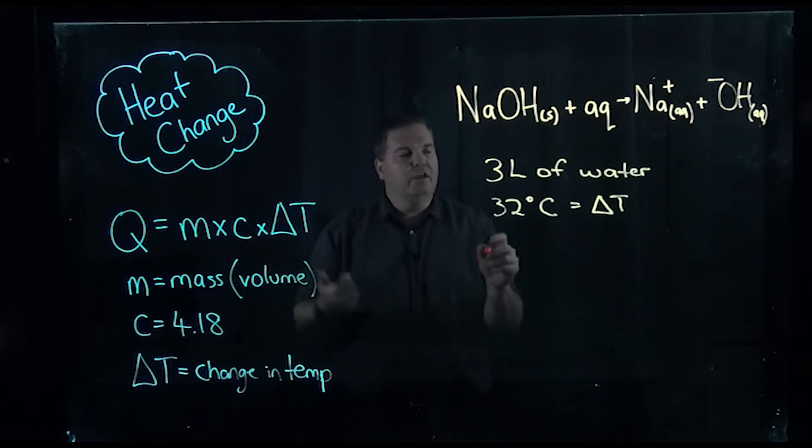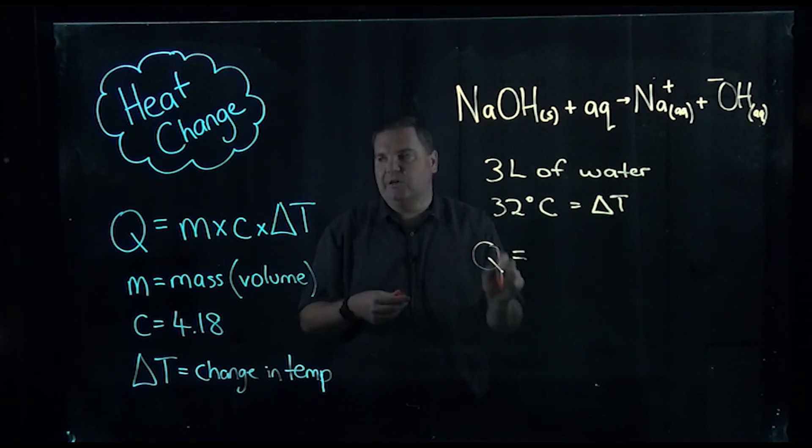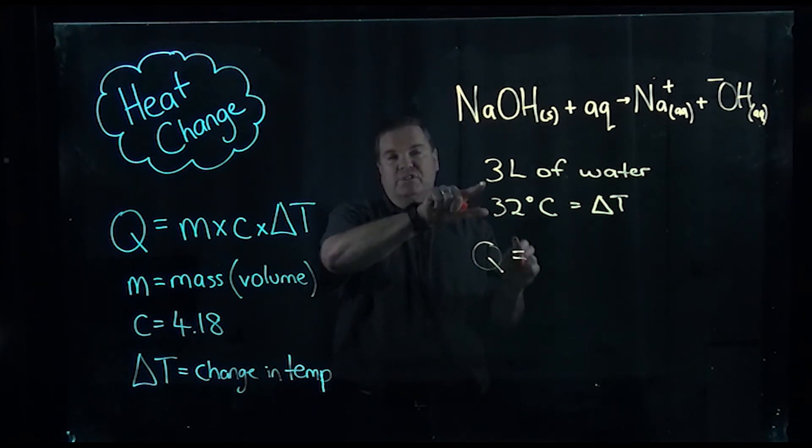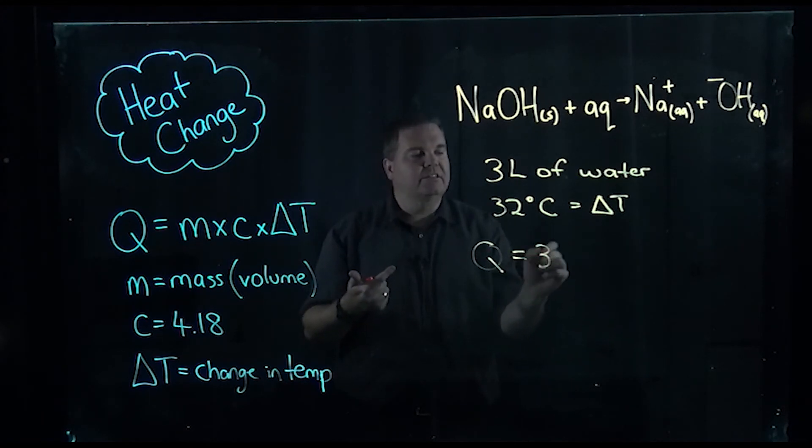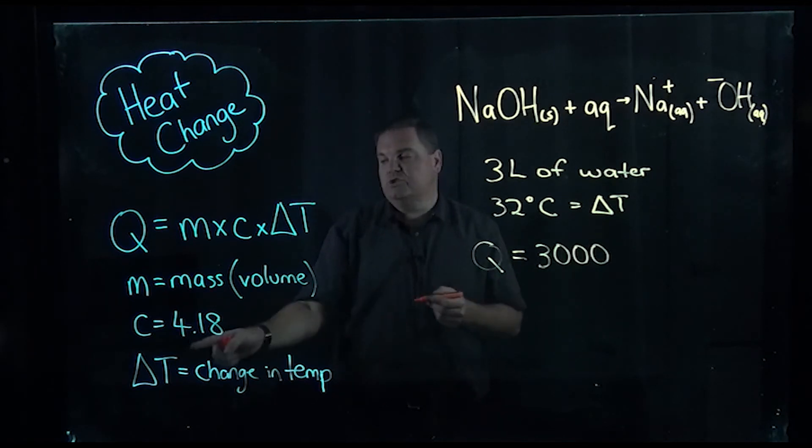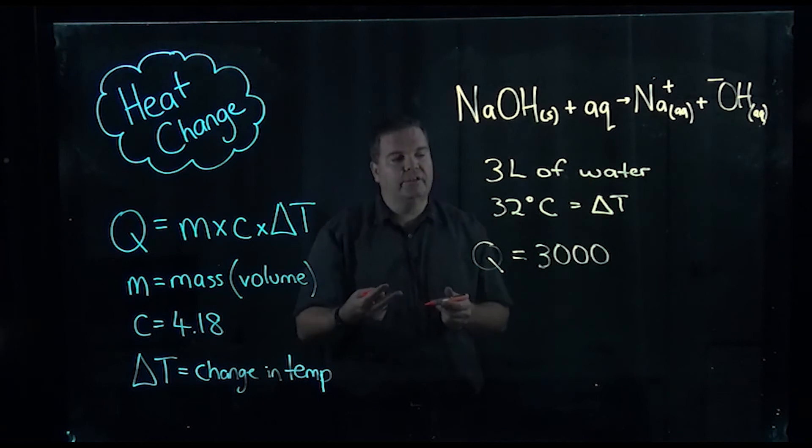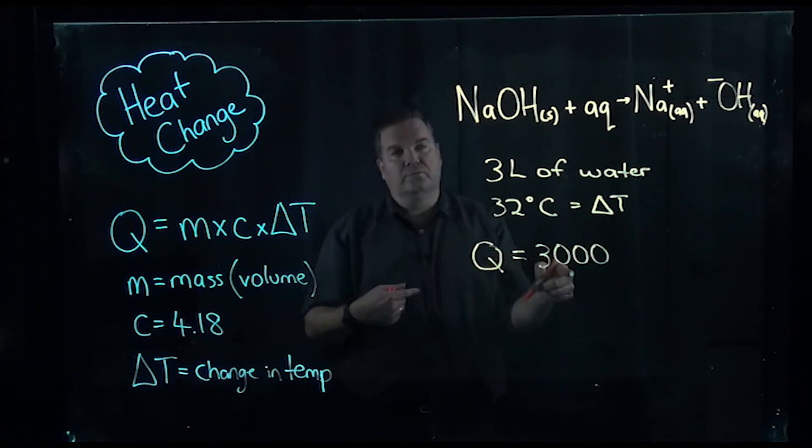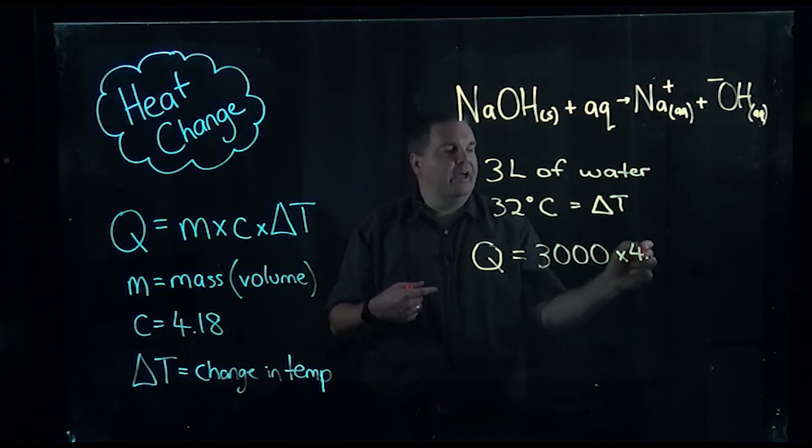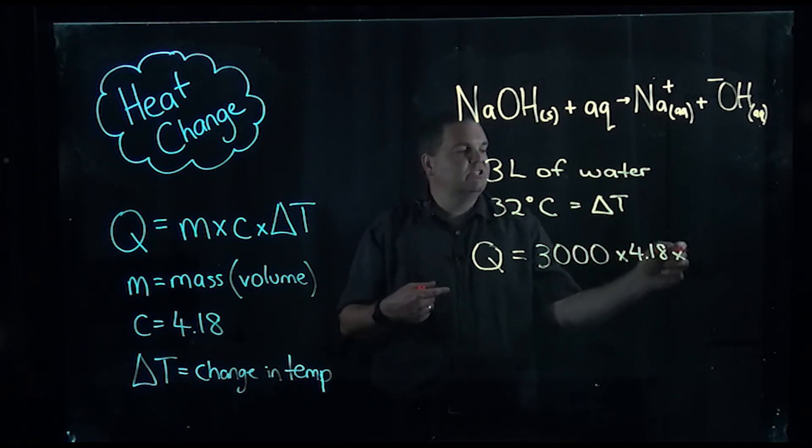So with that sort of temperature change, we can calculate the energy that's involved or the heat change in this solution. So Q is equal to - sorry my pen is dying so we have to change this - the mass which is three liters, so we're going to change that to 3000 because in this one here volume must actually be in milliliters because we're assuming that it takes 4.18 joules to raise one mil by one degree.